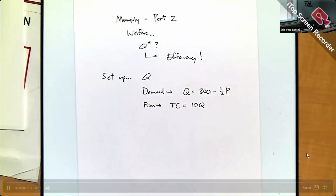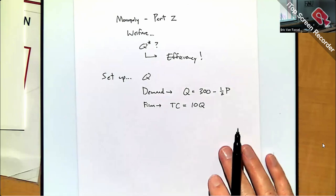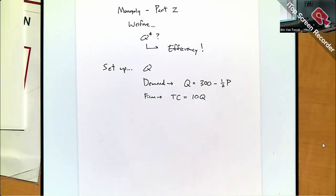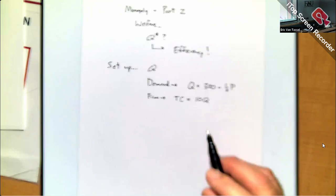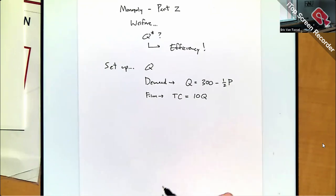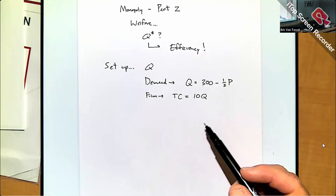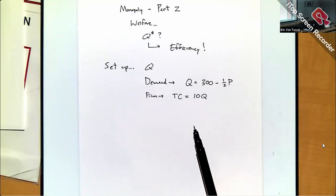I'll ignore any fixed costs and make the cost function really simple so it's easy to work with. The geometry and calculating deadweight loss is easiest with a simple total cost function. The idea is that depending on whether you're in a monopoly, perfect competition, or otherwise, this impacts what equilibrium we see in the market.